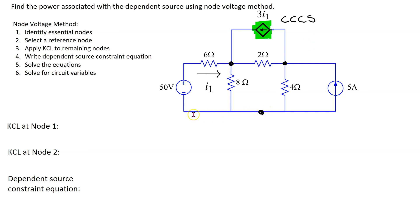Note that this whole bottom conductor is one node. We need to select one of these nodes to be a reference node. In this example, we can ground this bottom essential node. Now we are ready to start applying Kirchhoff's current law to the remaining nodes, so let's label the node voltages as V1 and V2.